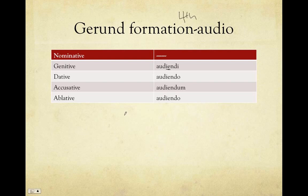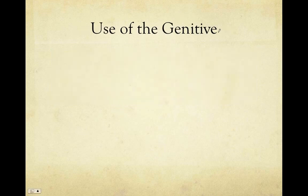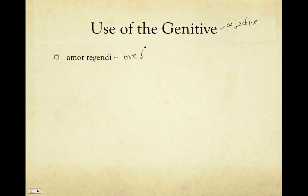Forming it is probably among the easiest things you're going to encounter in Latin. Using it is also going to be fairly easy because these are all uses you've already run into in Latin. They're used in very certain situations. The genitive is not going to be used for possession; instead, we're going to be using it for the objective genitive. Amor regendi — love of ruling. Amor could be in any case, but regendi here is our genitive gerund.